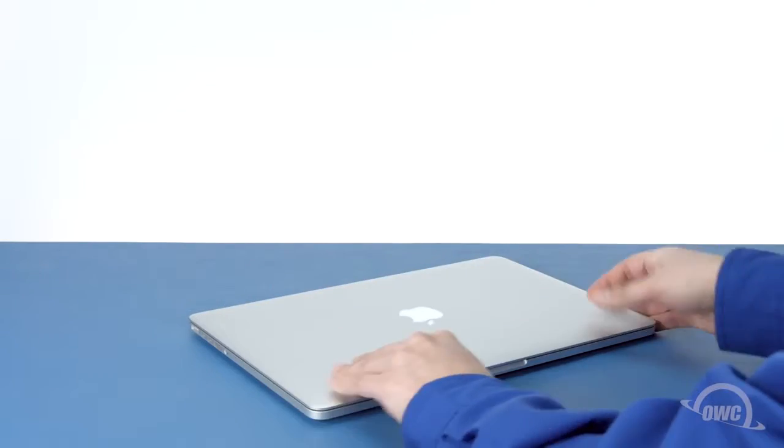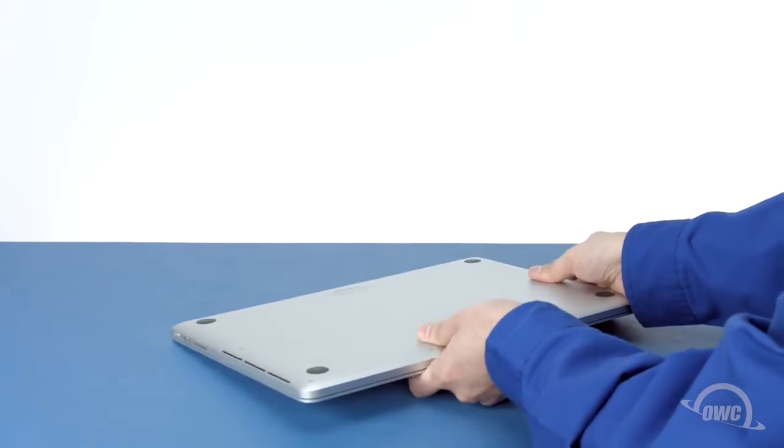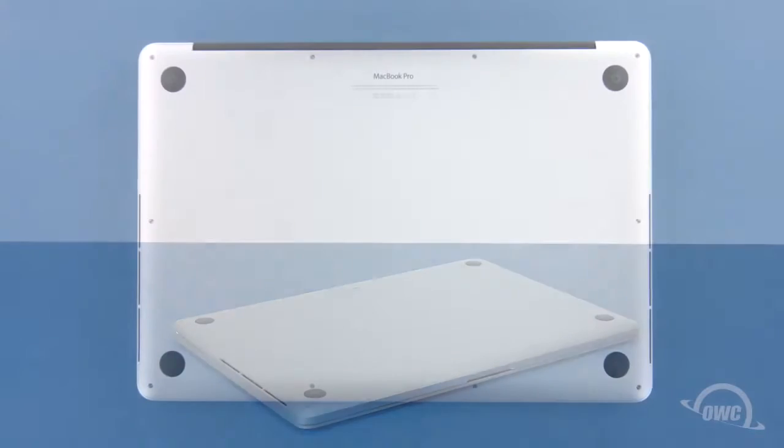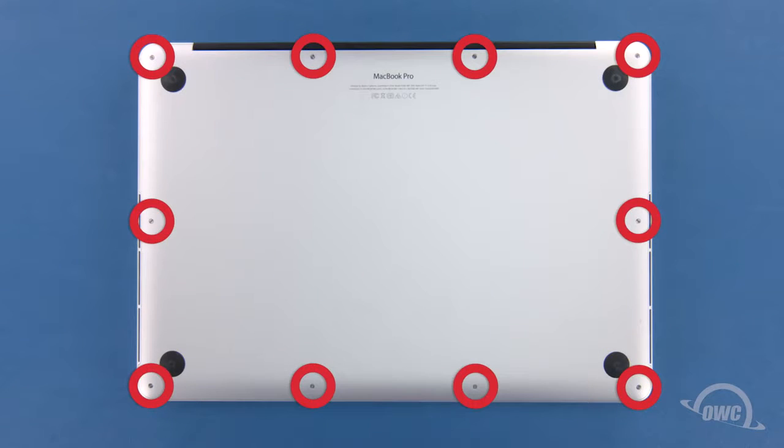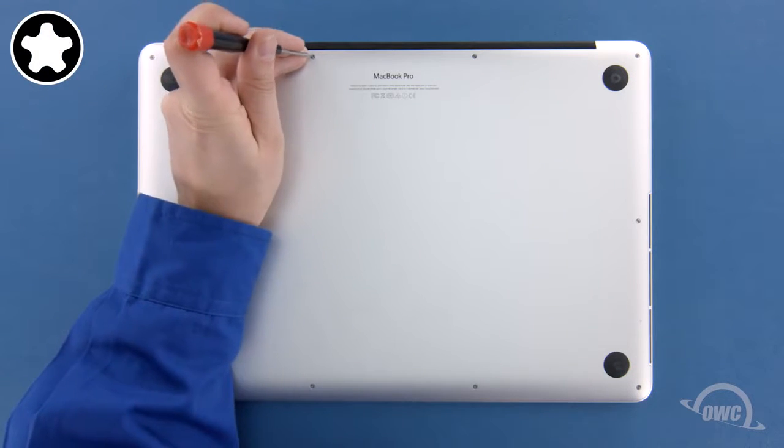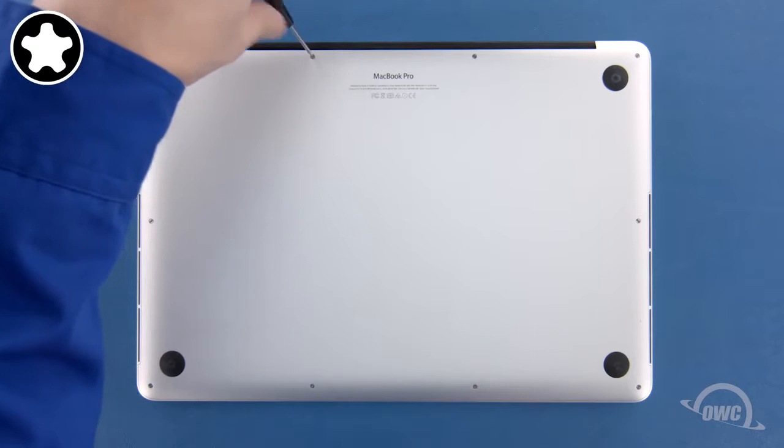The first step is to close the MacBook Pro and flip it over. On the bottom are 10 five-point screws to remove with your pentalobe screwdriver. The two center ones on the hinge edge are different from the others, so let's remove those first.